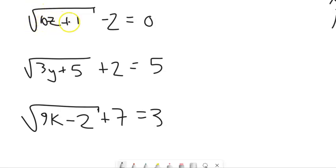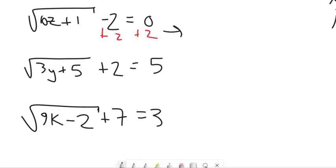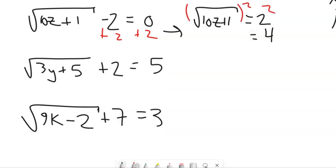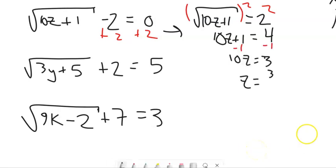This first one: I've got the square root of 10z plus 1 minus 2 equals 0. If I square both sides right now, I'm going to have to multiply that out times itself. So let me get the square root all alone, and then I can square both sides. I'm going to add 2 to both sides. Now I'm going to square both sides — over here I've got 4, over here I've got 10z plus 1. So I'm going to subtract 1 from both sides and divide by 10. It looks like z equals 3 tenths.